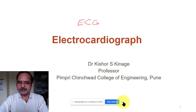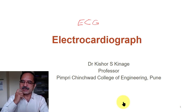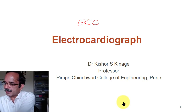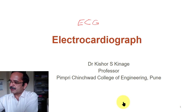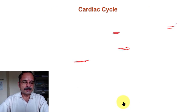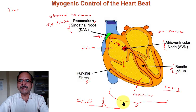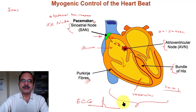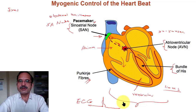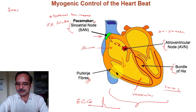Today we will complete a small remaining part from the electrocardiogram topic, and then after that we will go to the next topic, which is heart sounds. Last time we discussed the electrical activity of the heart, how the ECG waveform is generated and how it is related to the pumping action of the heart. We saw that the electrical activity originates from the SA node, then proceeds towards the AV node, then bundle of His and the Purkinje fibers.